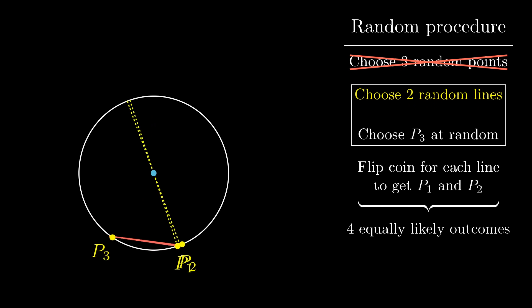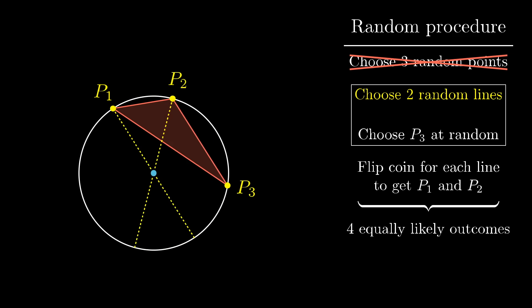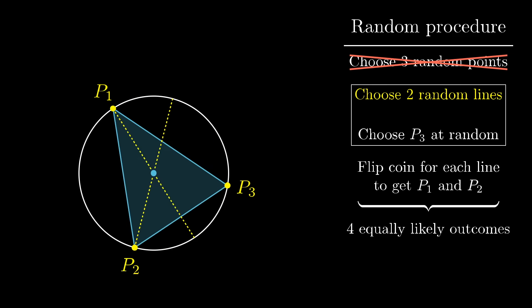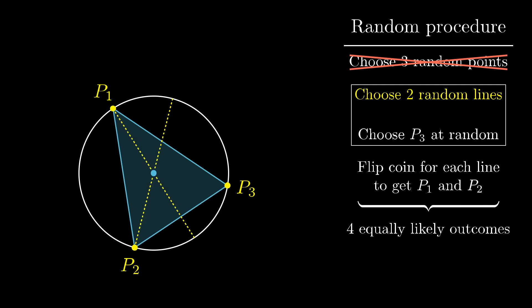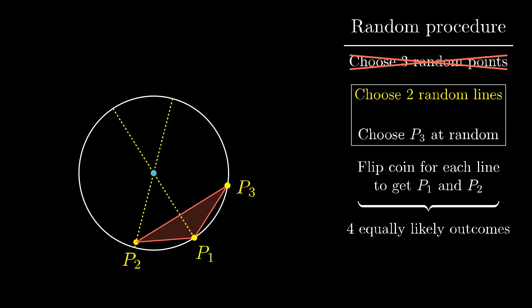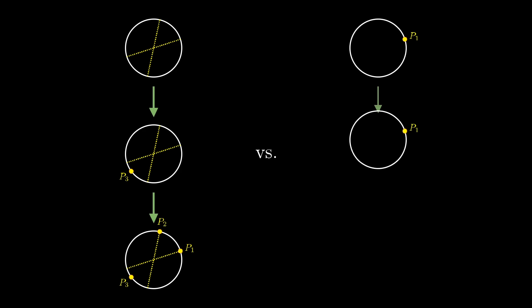So no matter where those two lines end up, and where that p3 ends up, it's always a one-fourth chance that the coin flips leave us with a triangle containing the center. Now that's very subtle. Just by reframing how we think about the random process for choosing points, the answer one quarter popped out in a very different way from how it did before.